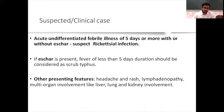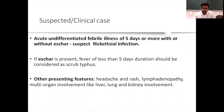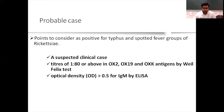A suspected clinical case is when the patient has acute undifferentiated febrile illness for four or more days with or without eschar, and suspicion of rickettsial infection — or if eschar is present, fever of less than five days duration. Other presenting features include headache, rash, lymphadenopathy, and multi-organ involvement of liver, kidney, and lung. A probable case requires all the clinical case findings plus a Weil-Felix titer of 1:80 or above for OX2, OX19, and OXK antigens, or an optical density of more than 0.5 for IgM by ELISA.